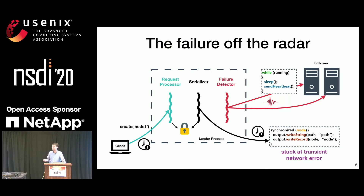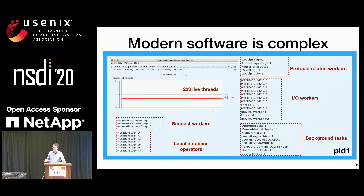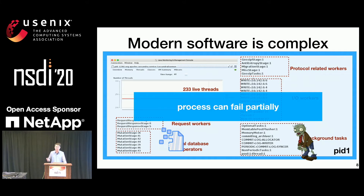This incident is actually not a single case. In fact, such partial failures are common in modern software because of their complex internals. For example, a Cassandra process could have more than 200 live threads at runtime. Each of them could experience some problems — an IO worker could get stuck, a background task could silently exit. When this happens, this process may fail partially. Such partial failures can cause very serious impact, like data loss or systems entering a zombie mode.